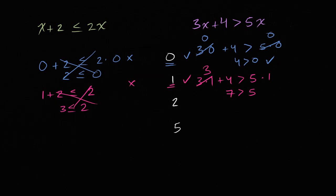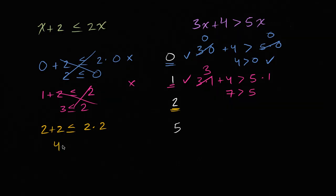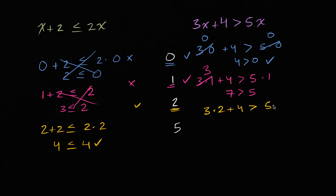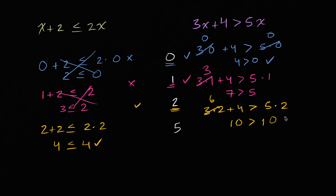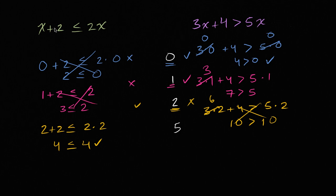Now let's go to two. Two plus two needs to be less than or equal to two times two. So four needs to be less than or equal to four. Four is equal to four, and it just has to be less than or equal, so this satisfies the left inequality. What about the purple inequality? Three times two plus four needs to be greater than five times two. Three times two is six, plus four is 10, and 10 needs to be greater than 10. But 10 is equal to 10, it's not greater than 10. If this were greater than or equal to, it would have satisfied it, but it's not. So two satisfies the left-hand inequality but not the right-hand one.